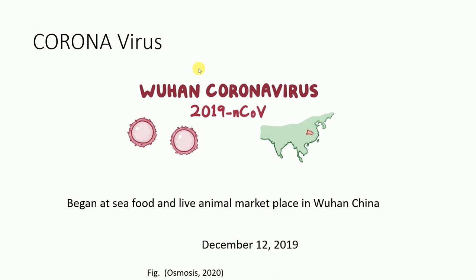This coronavirus actually began at a seafood and live animal marketplace in Wuhan, China on December 12, 2019. It is also called the Wuhan virus because it was first identified in Wuhan, China — the epicenter of this global outbreak. It is also called the 2019 novel coronavirus and has now spread outside of China to several countries in Asia, Europe, and the Americas.